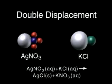In a double displacement reaction, the positive and negative portions of two ionic compounds interchange.